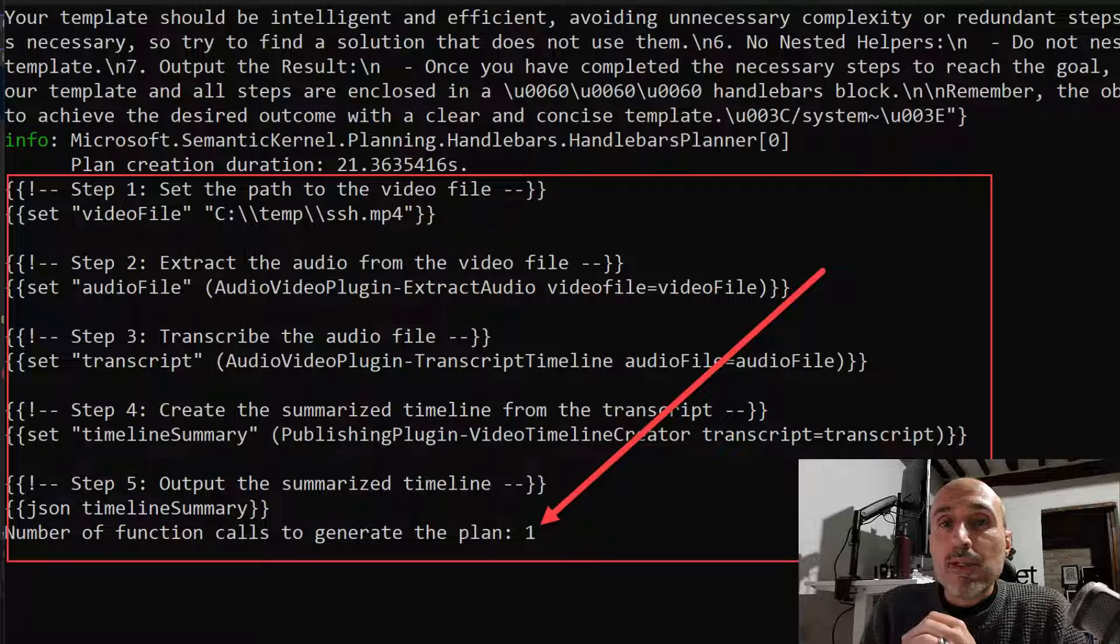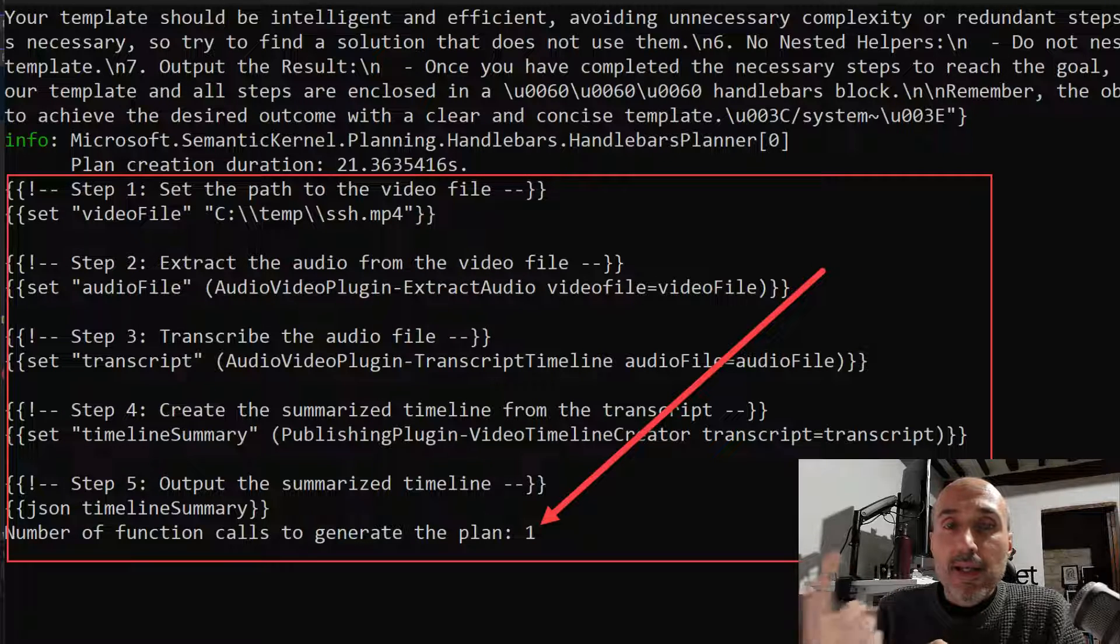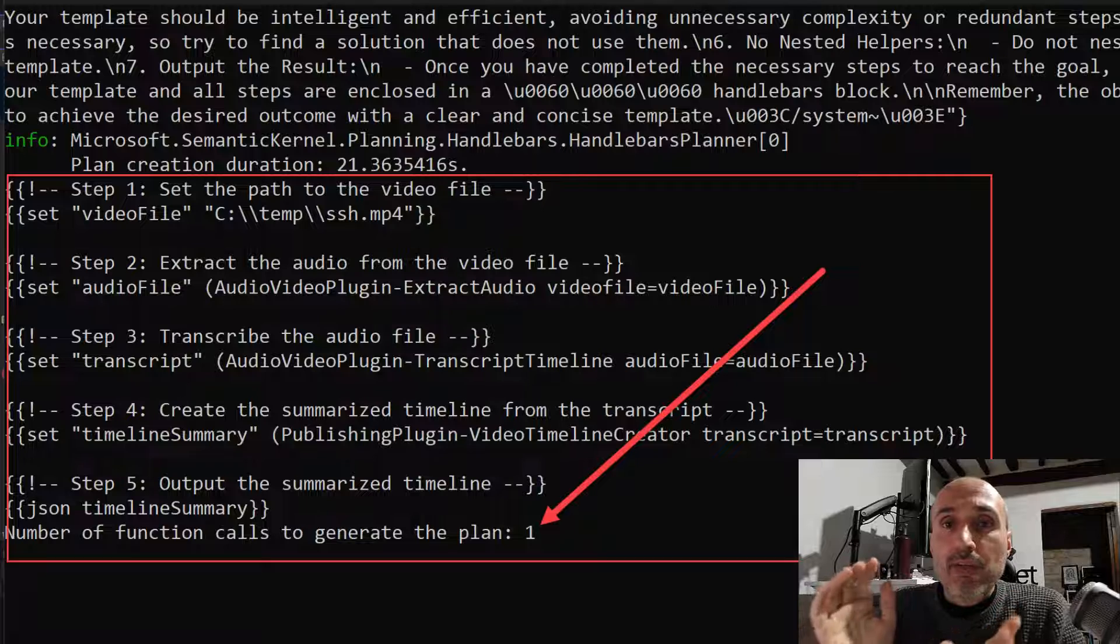As you can see, I've dumped in the console the whole plan. So the user can see what's going to be executed. And I've pointed out that I had only one call to my large language model. So I have a single call to have this plan. And this is usually faster than proceeding step-by-step.